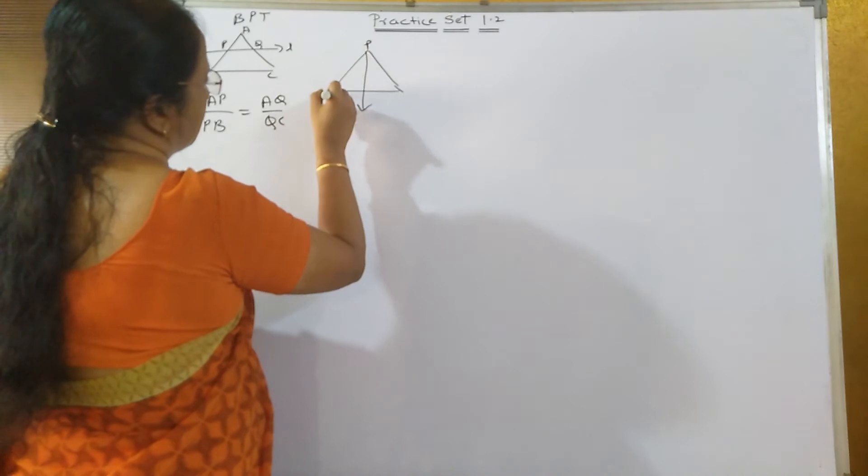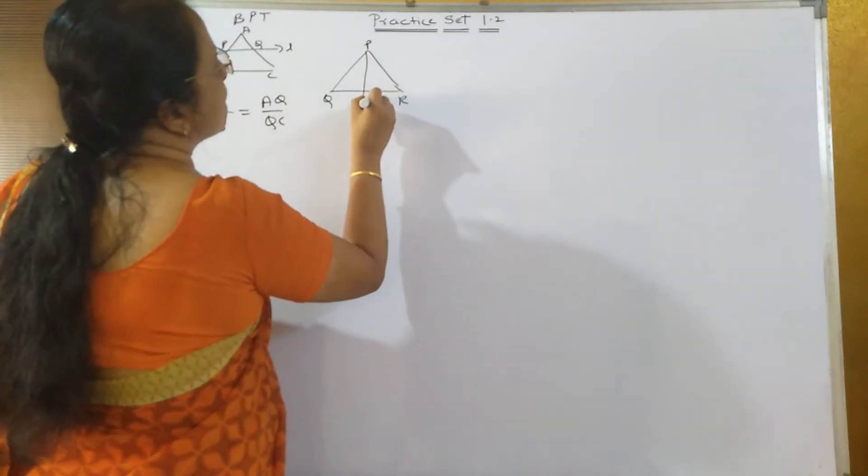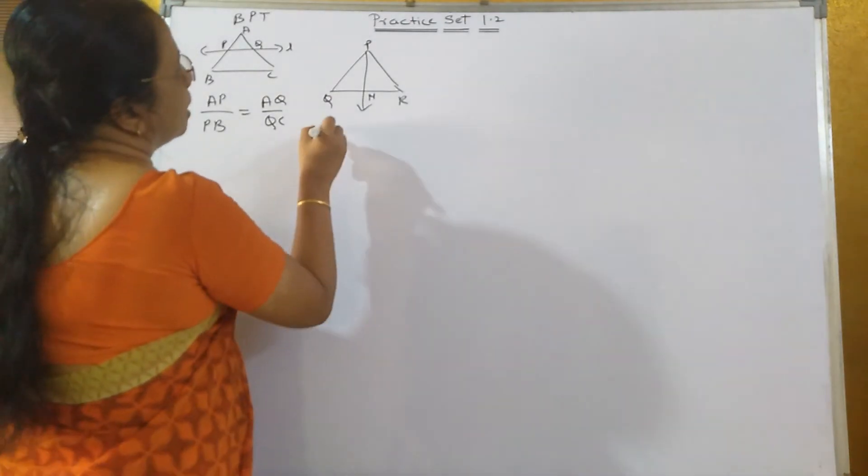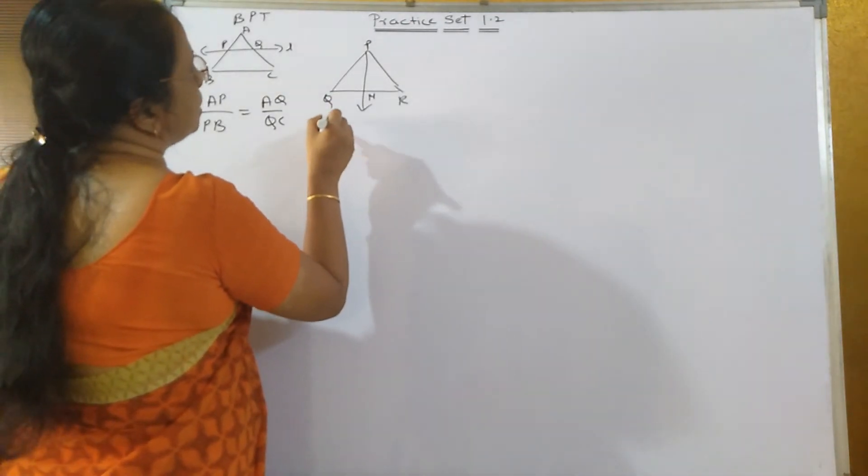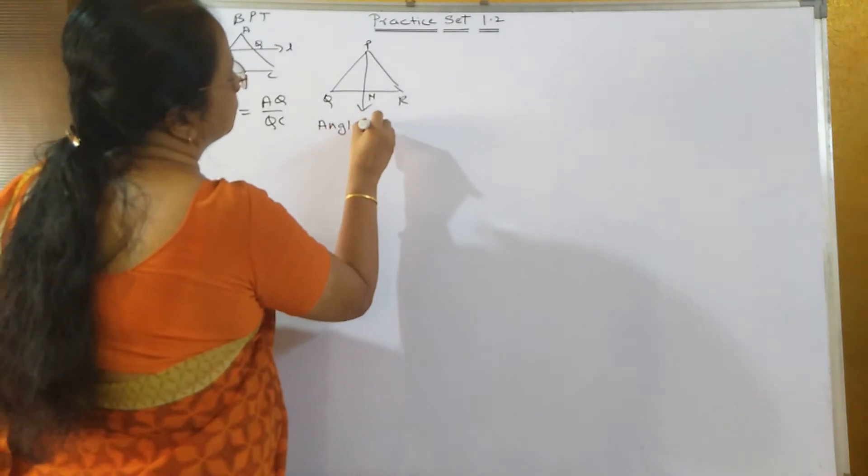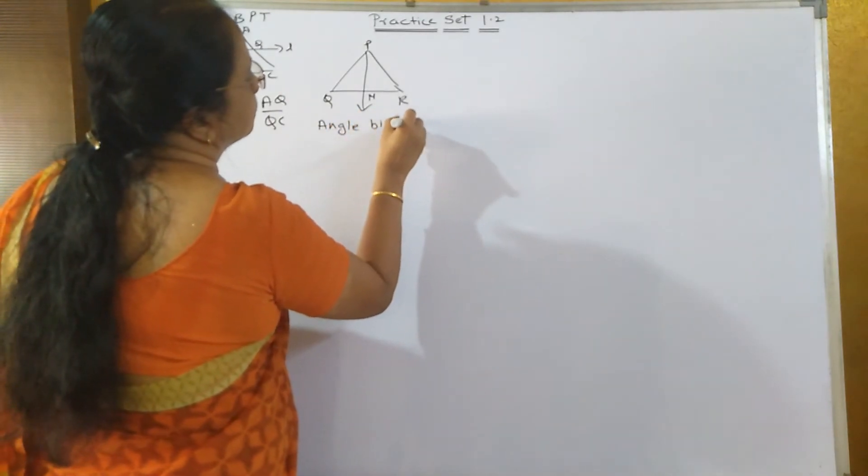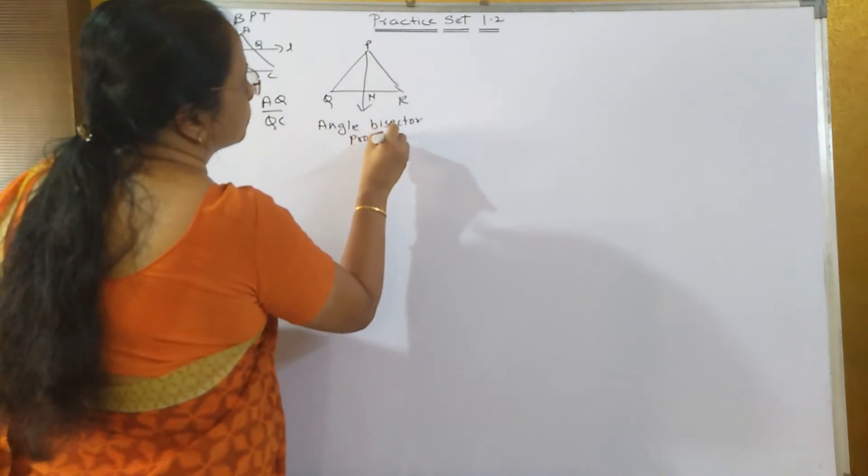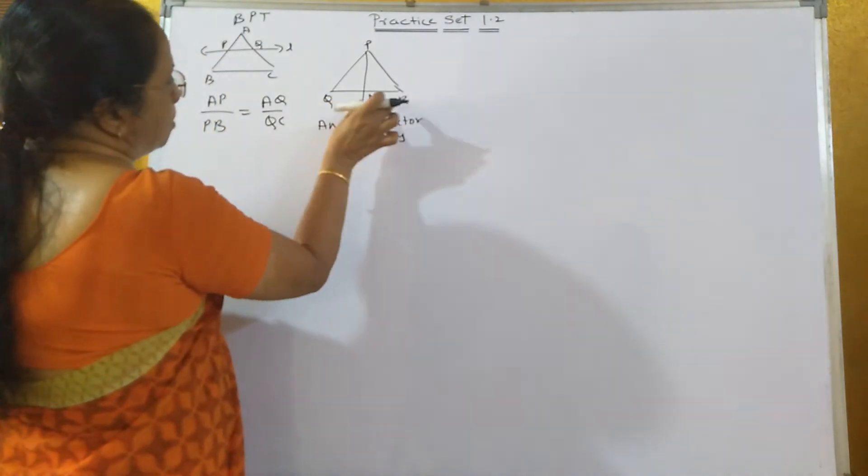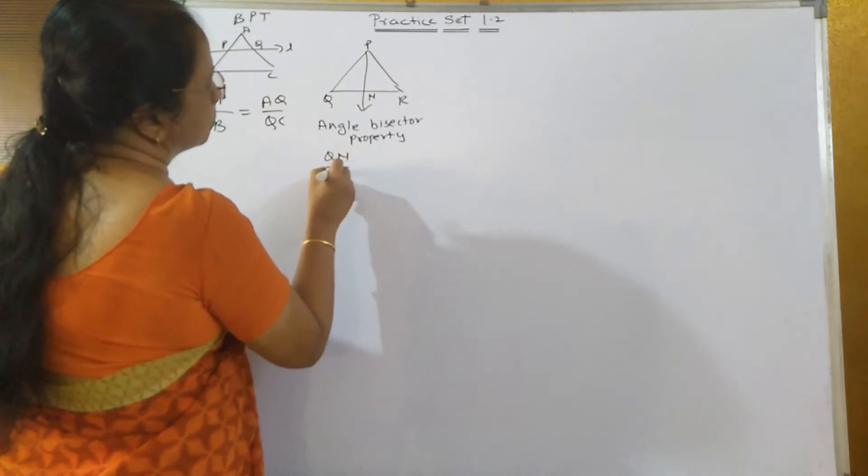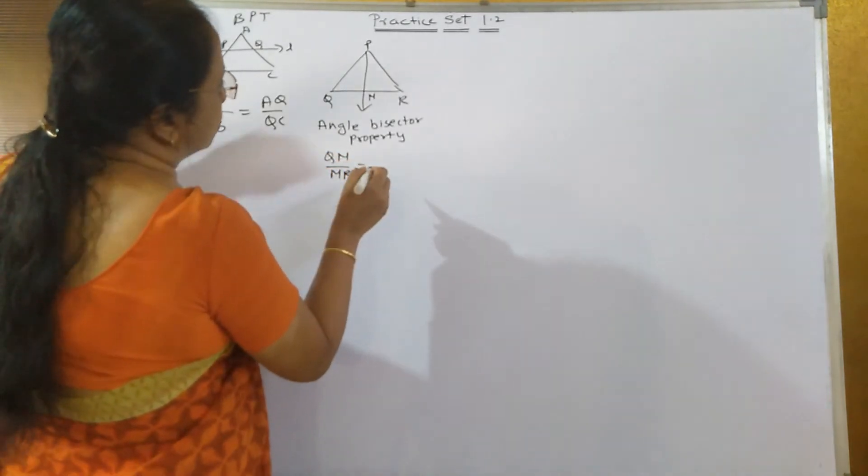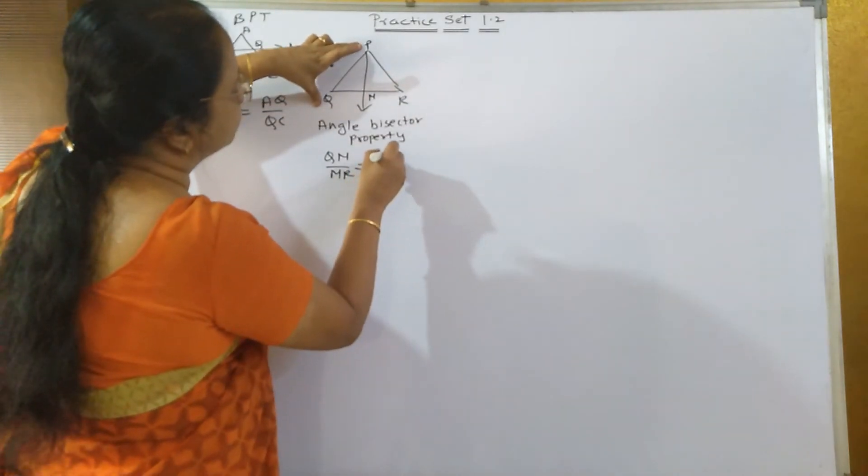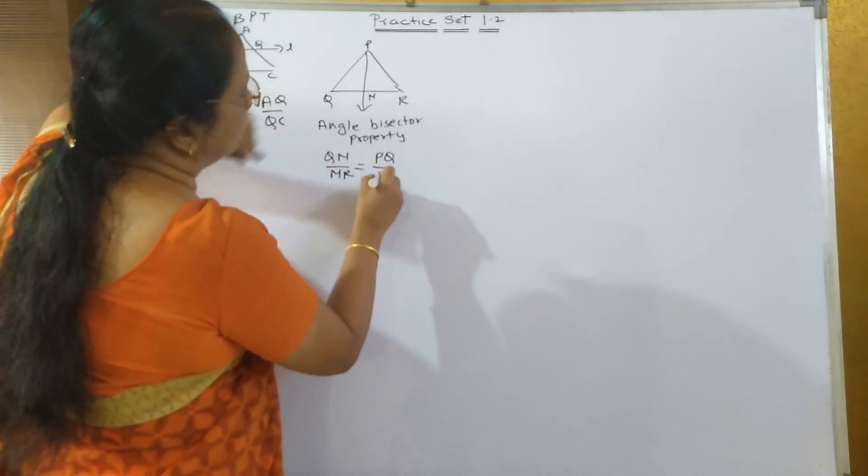So if ray PM bisects angle P, then according to angle bisector property, QM upon MR is equal to PQ upon PR. I started from here, so I'll take this side. If you take the other way round, you will get the answer wrong, so be careful while writing the ratios.